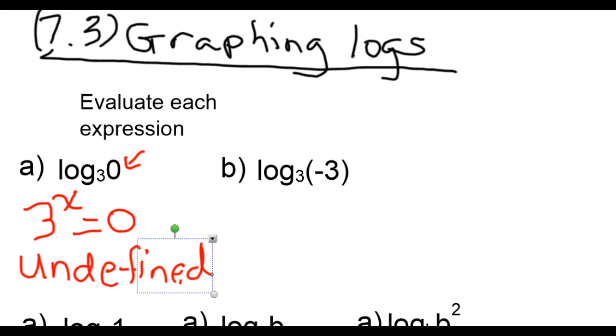In example B, we see log base 3 of negative 3. Rewriting this in exponential form, I would have 3 to what power equals negative 3. If you think about this, no matter what I raise a positive value to as an exponent, it will be impossible to create a negative answer. So if you see a negative argument here, that answer is always going to be undefined. That's not possible.